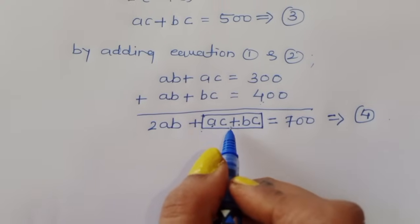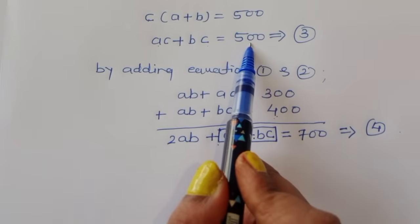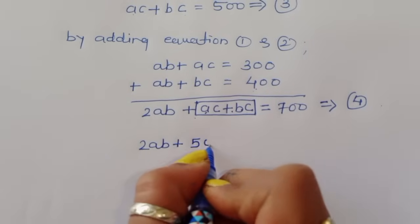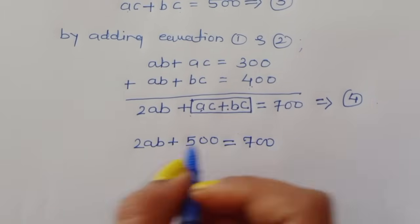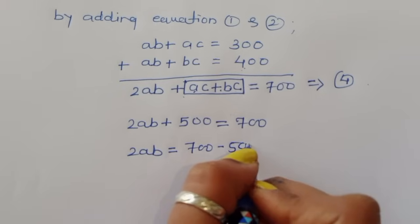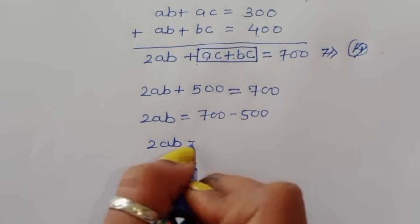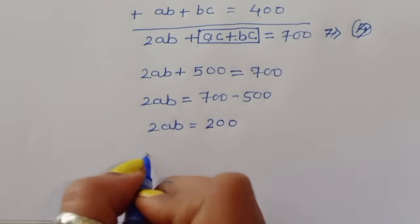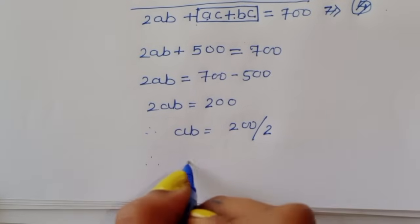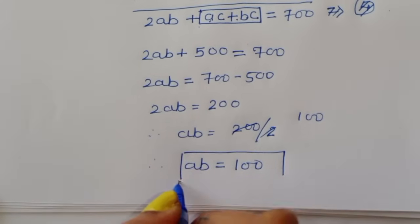Now, 2AB plus AC plus BC equals 700. But according to equation 3, AC plus BC equals 500. So substituting, 2AB plus 500 equals 700, giving 2AB equals 200. Therefore AB is equal to 100.